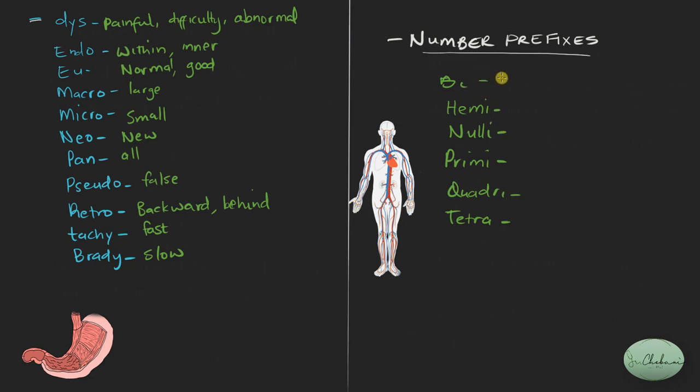So what do they mean? Bi means two. Hemi means half, like hemiplegia. Nulli means none. For instance, in gynecology, we talk about nulliparous, meaning to deliver. So that's a woman who has never delivered a life baby. And then primi means first. And again, in OB you'll see terms like primigravid, meaning someone is pregnant for the first time. And then quadri means four. And then tetra means four as well. So these two, both of them mean four.